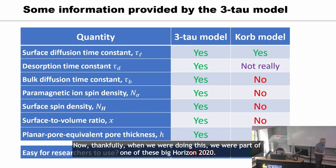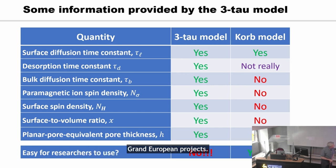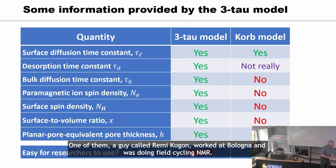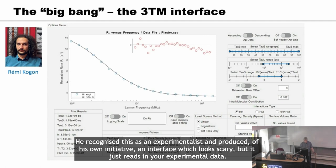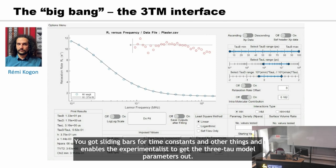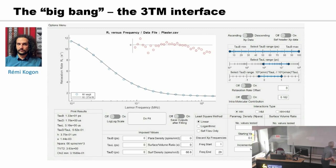Thankfully, when we were doing this, we were part of one of these big Horizon 2020 grand European projects involving 13 PhD students across various institutions. One of them, a guy called Rémy Cogon, working at Bologna and doing field cycling NMR, recognised this as an experimentalist and produced of his own initiative an interface which just reads in your experimental data. You've got slider bars for the time constants and other things, enabling the experimentalist to get the 3-tau model parameters out.